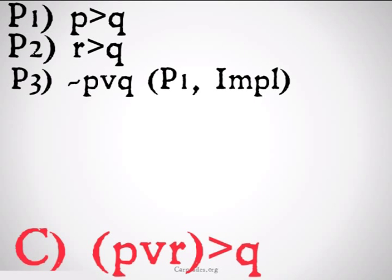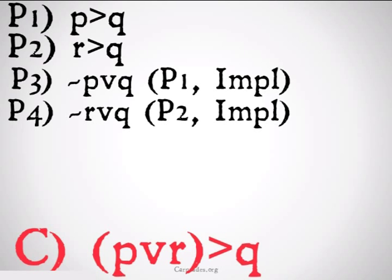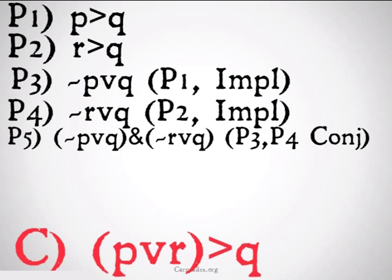What we'll do is we'll take P implies Q and we're going to turn it into something we can use a lot better, an implication statement. Not P or Q, premise 1 implication. We'll do the same with premise 2. Then we're going to go ahead and conjoin them.